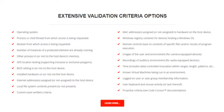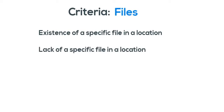Let's pick one of the criteria options to use as an example. Let's start with the files criteria — it's probably one of the simplest to understand and to visualize. As with the others on the list, files has a ton of options. You can require the existence of a specific file in a specific location, or require that a specific file must not exist.